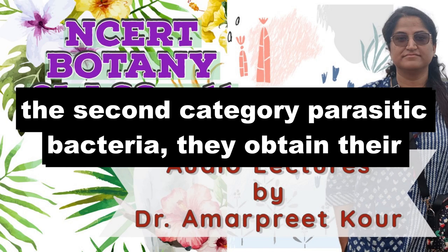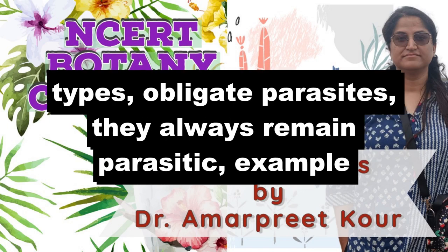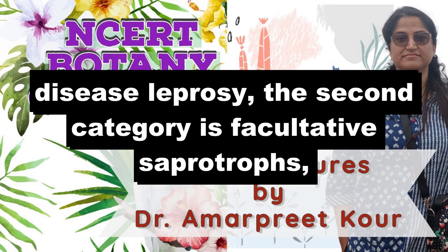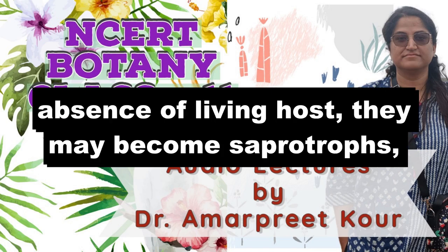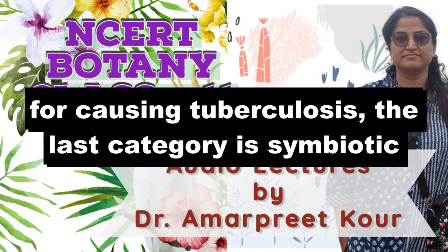The second category of heterotrophs is parasitic bacteria — they obtain their food from living organisms. They have two types: obligate parasites, which always remain parasitic — example is Mycobacterium leprae, responsible for causing leprosy — and facultative saprotrophs, which are normally parasitic but may become saprotrophs in the absence of a living host. Example is Mycobacterium tuberculosis, the agent for causing tuberculosis.